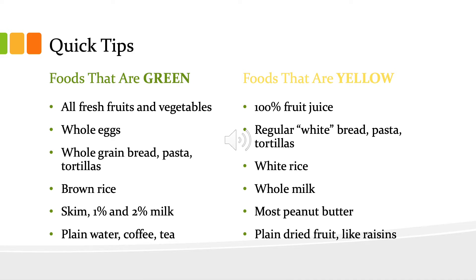Foods that are yellow are 100% fruit juice, regular white bread, pasta and tortillas, white rice, whole milk, most peanut butter, and plain dried fruit like raisins.